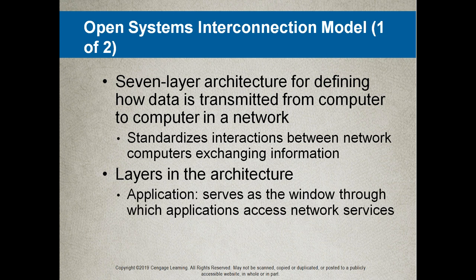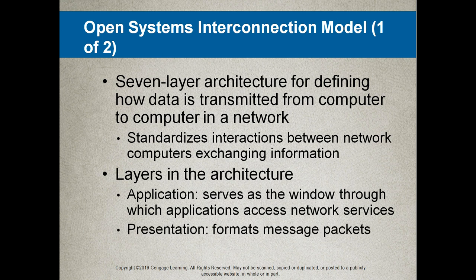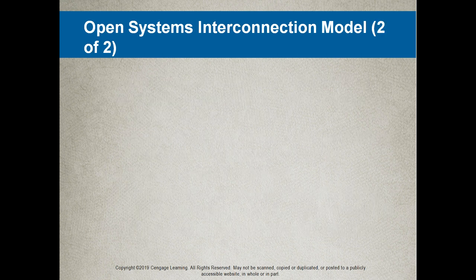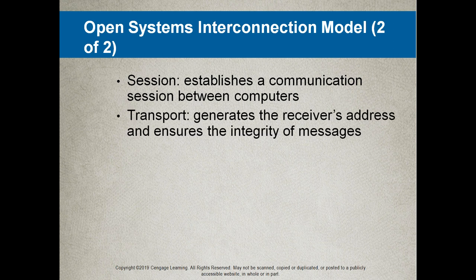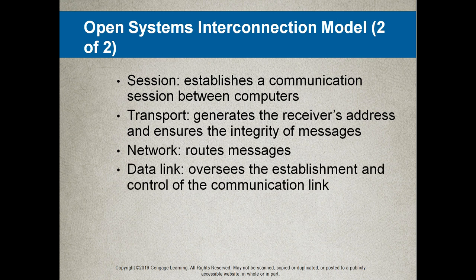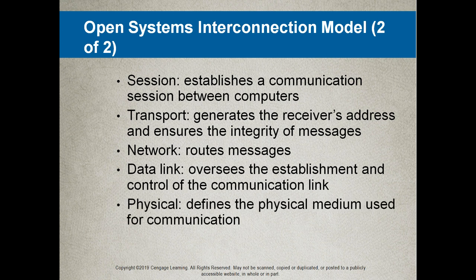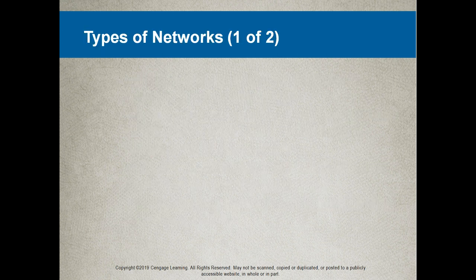The layers in the OSI architecture are: the application layer at the top, which serves as the window through which applications access network services; the presentation layer, which formats messages into packets; the session layer, which establishes a communication session between two computers; the transport layer, which generates the receiver's address and ensures message integrity; the network layer, which routes the messages; the data link layer, which oversees the establishment and control of the communication link; and the physical layer, which defines the physical medium used for communication.